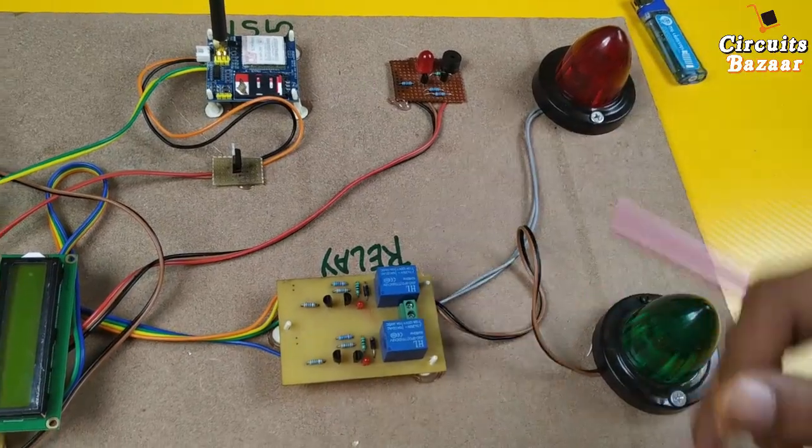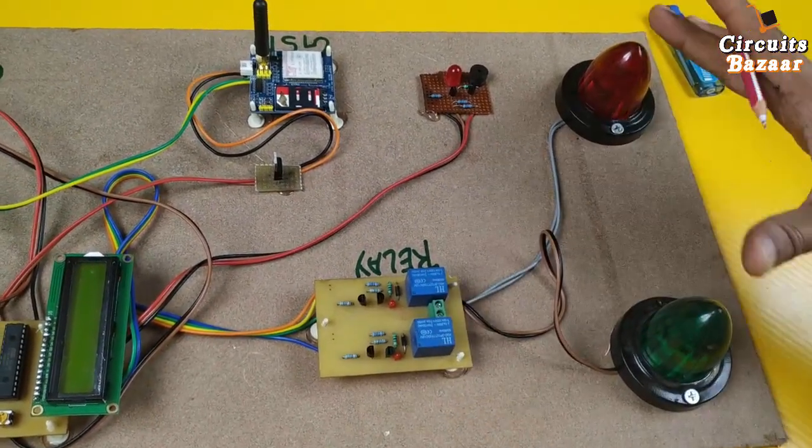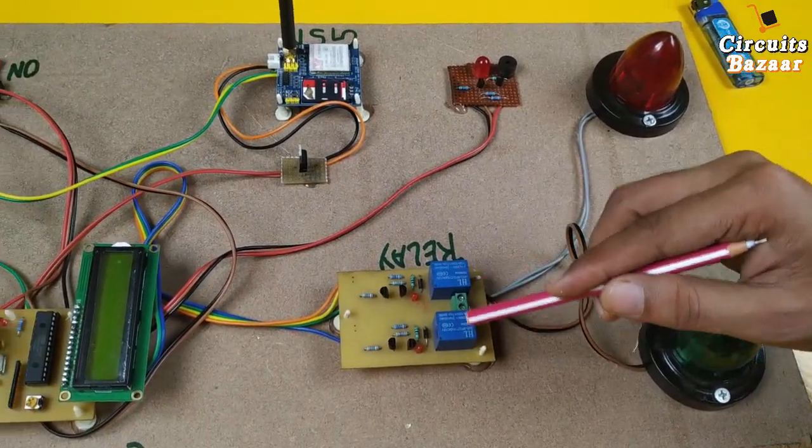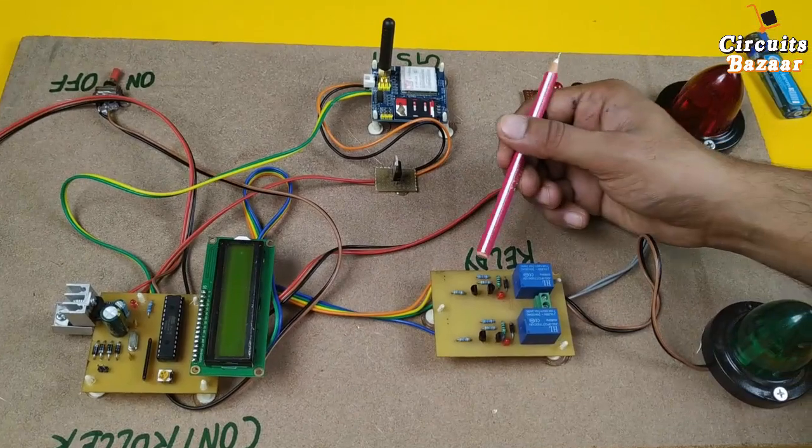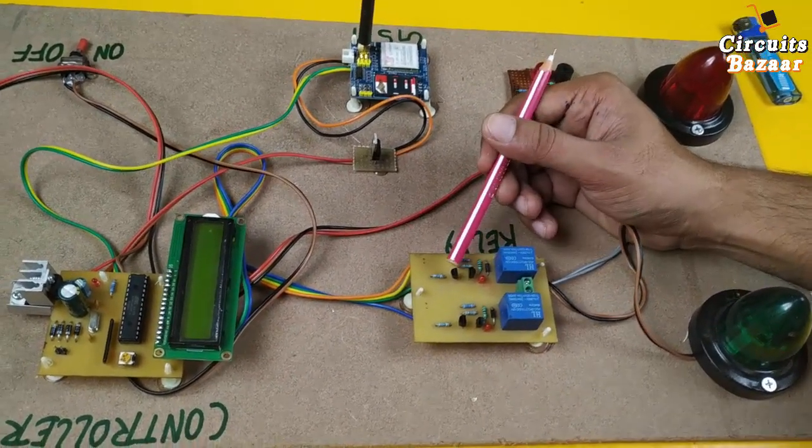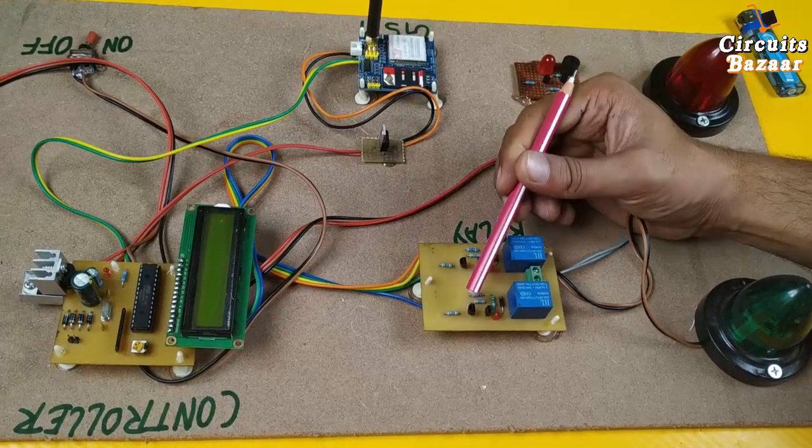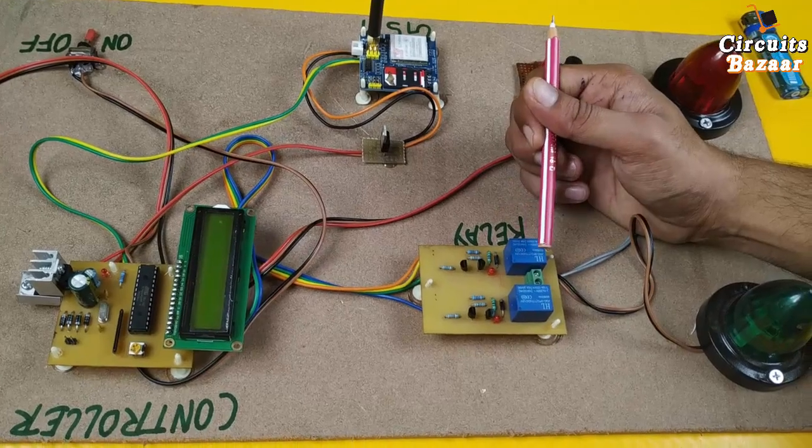You have to use relay as a driver to drive these two. So these two relays act as a driver for these indicators. But relay itself you cannot drive with the microcontroller. You have to use transistor which is Darlington pair over here to drive these relays. These two transistors drive this relay, and these two transistors drive this relay. This is the LED indicator which will show whether relay is working or not.